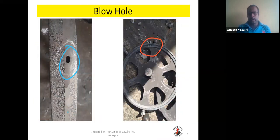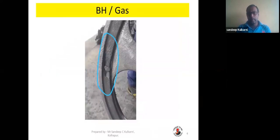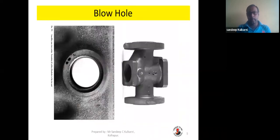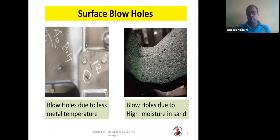Here are some photographs of blowhole defects — you can see the blowhole defect shown with a rounded circle. On my left, blowhole caused by low metal temperature — you can see the vents are not fully open. On my right, blowhole due to high moisture — you can see a rough surface finish. The moisture is high, causing a rough surface, and it clearly indicates that moisture levels are high in the sand. This blowhole is mainly because of moisture in the sand.